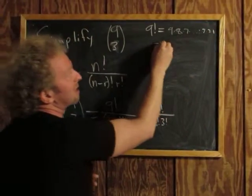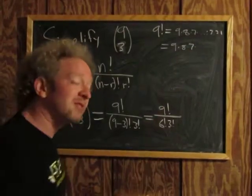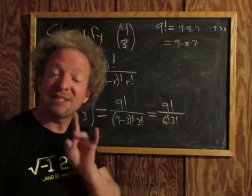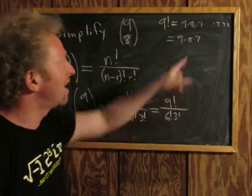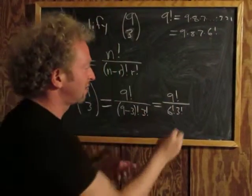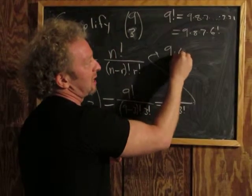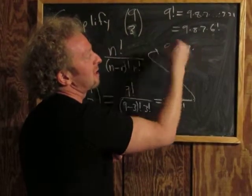You can write 9 factorial as 9 times 8 times 7, and the rest is 6 times 5 times 4 times 3 times 2 times 1. That's actually 6 factorial. So you can write this as 9 times 8 times 7 times 6 factorial.